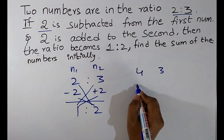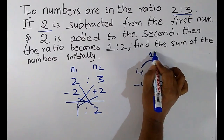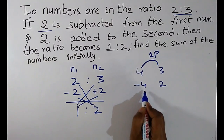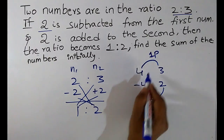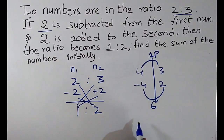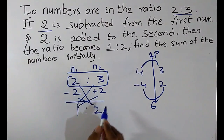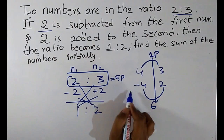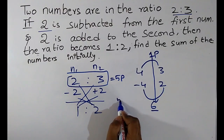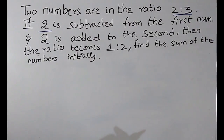By cross multiplying we develop the duplicate format: 2×2=4, 3×1=3, 2×(−2)=−4, 1×2=2. The difference in the upper row is 4−3=1 part. The difference in the lower row is from 2 to −4, which is 6. From this we conclude that 1 part equals 6 units.